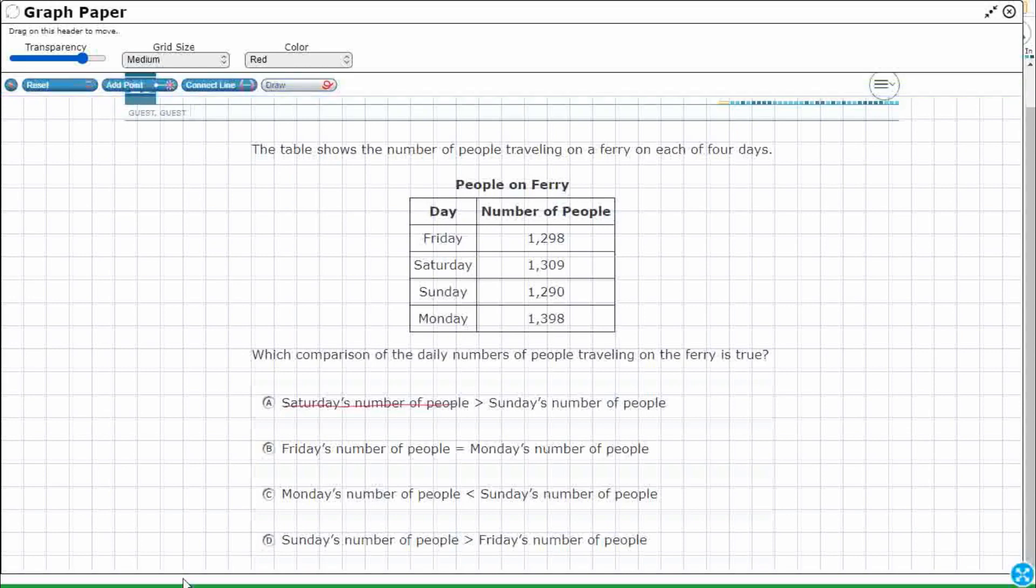So instead of this, let's just put the actual number 1,309. And then Sunday's number of people, let's put the number 1,290. Alright so we're gonna compare these two.